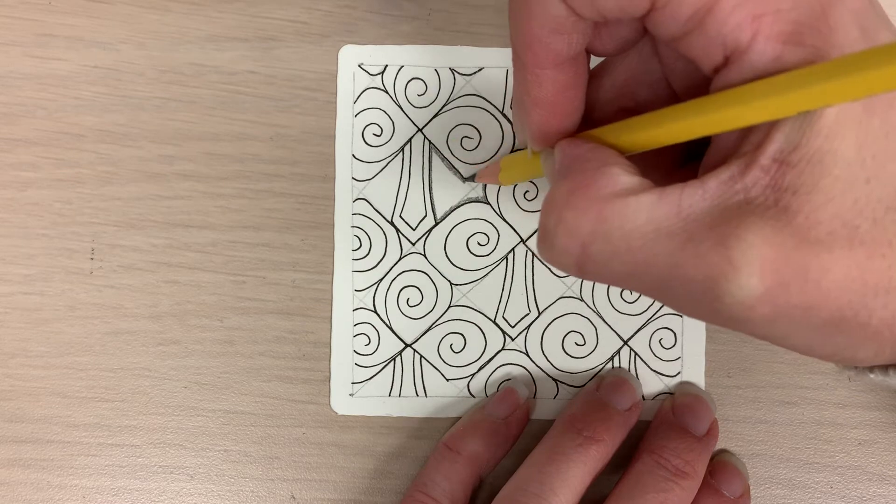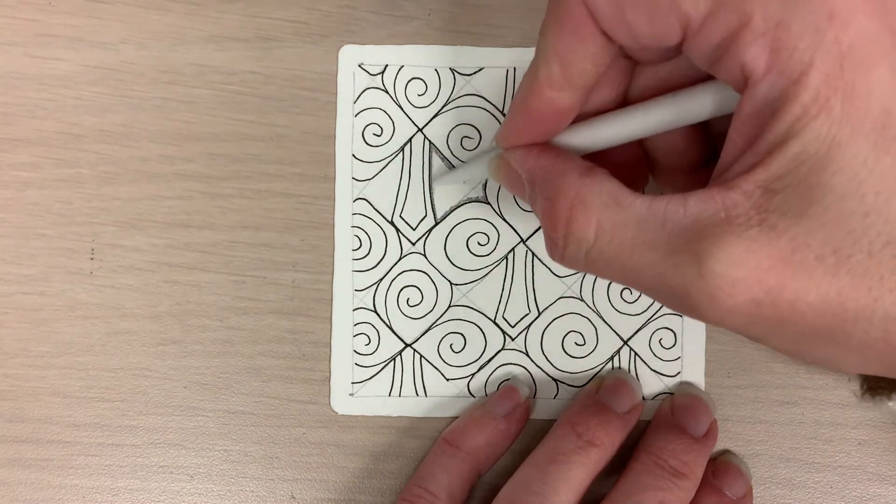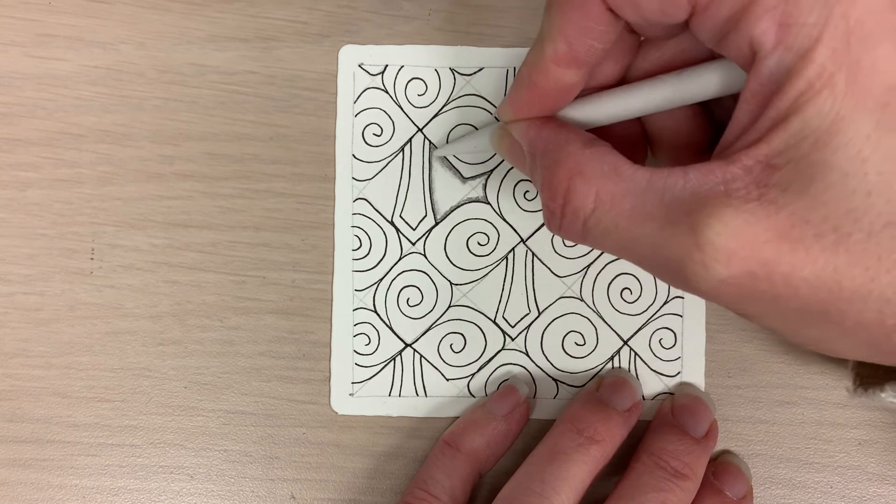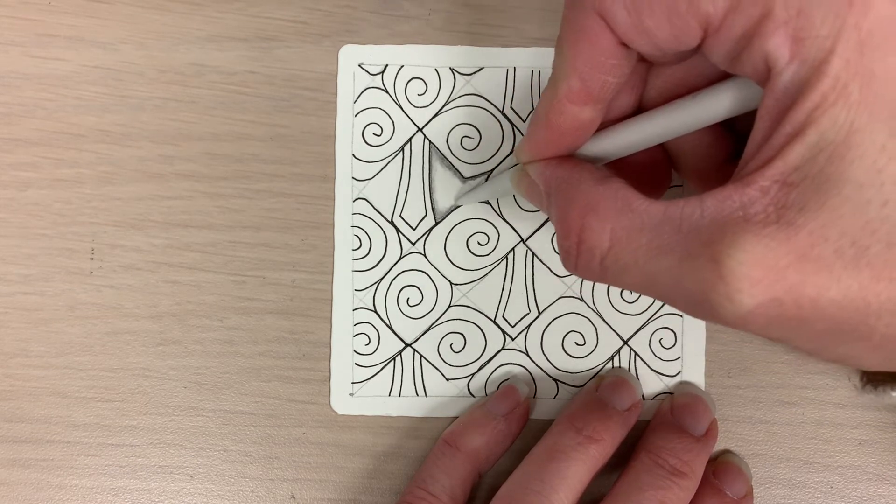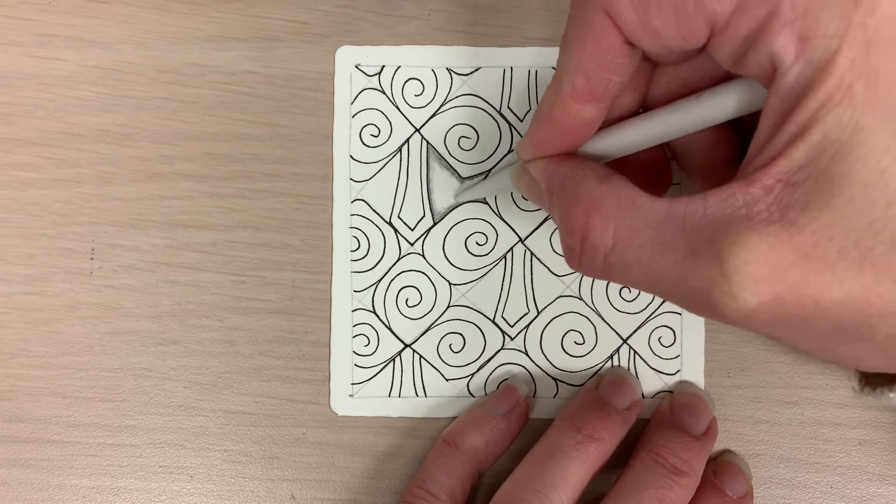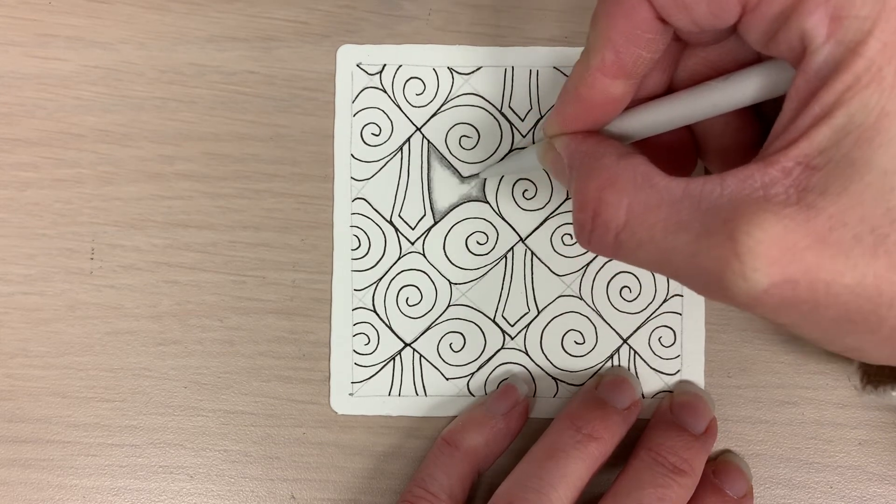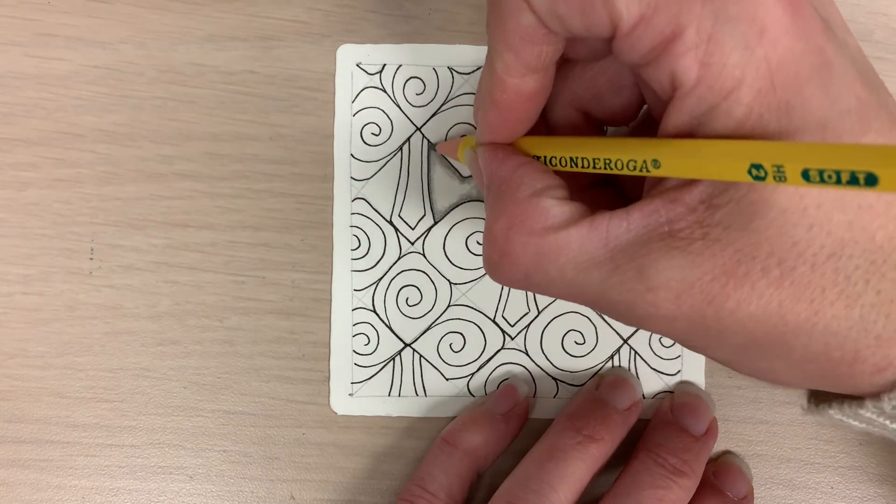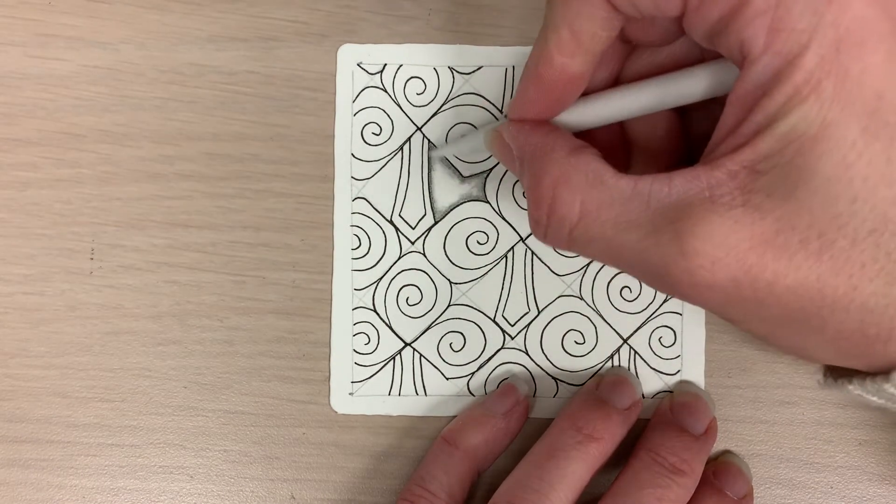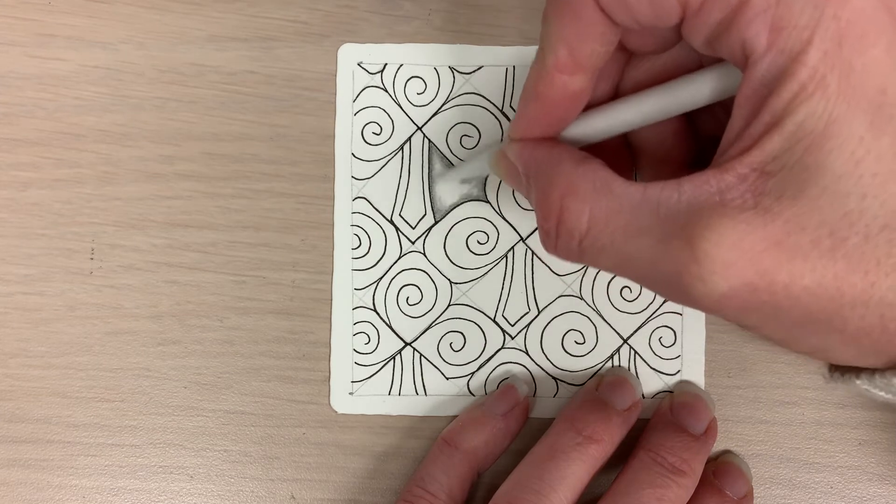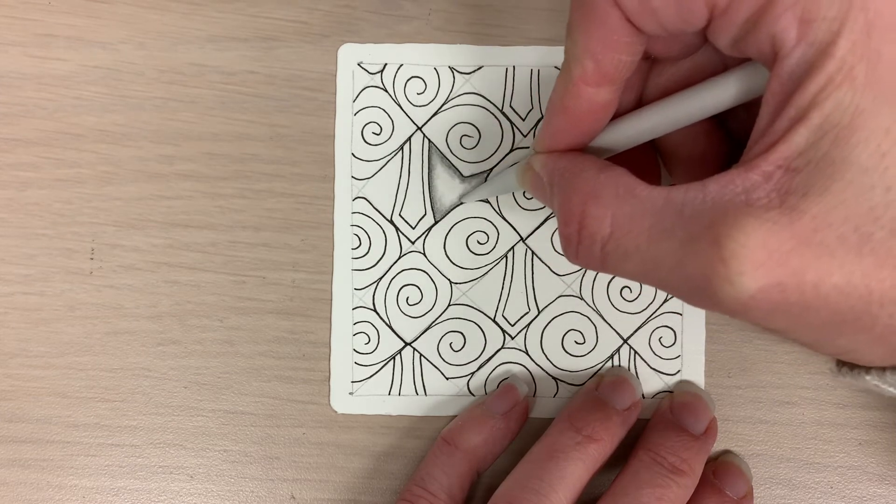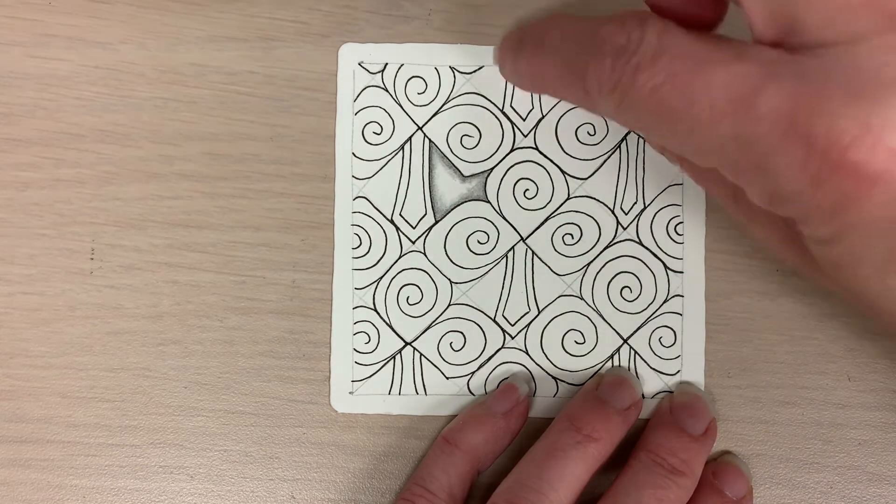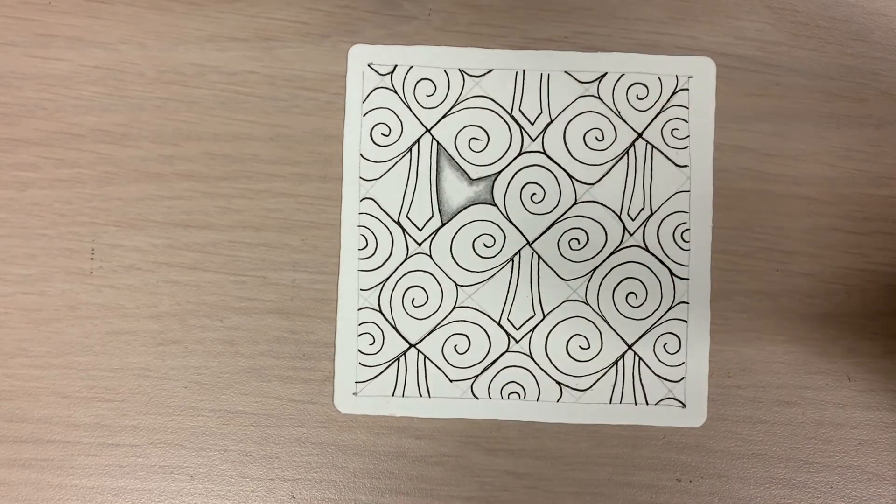And I'm going to gently take my tortillon and bring it out towards the center leaving white still showing in the center. We don't want this to get all gray. If it doesn't spread out enough then go back in, add a little pencil. You shouldn't have to be scrubbing your paper, it should be a nice gentle touch. Let's go ahead and do that in all the background pieces.